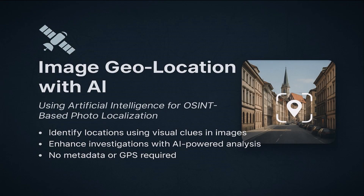In this tutorial, we're diving deep into image geo-location with AI. We'll explore how sophisticated AI models can detect subtle patterns in architecture, unique terrain, telltale vegetation, weather conditions, and even the angle of shadows to estimate a photo's geographic origin — all without relying on GPS metadata or EXIF data.